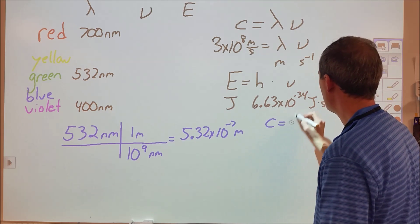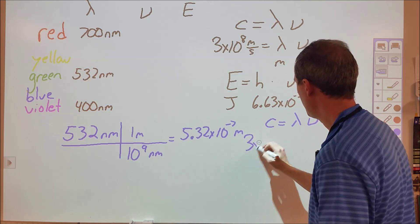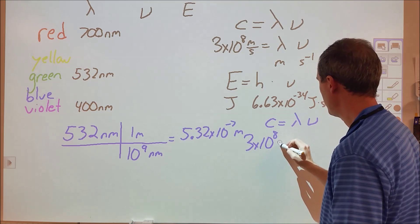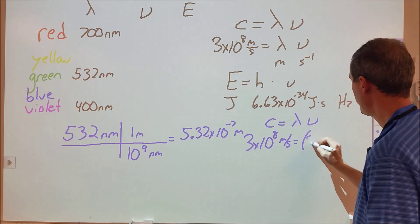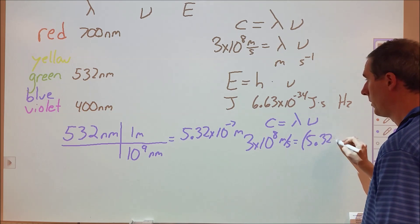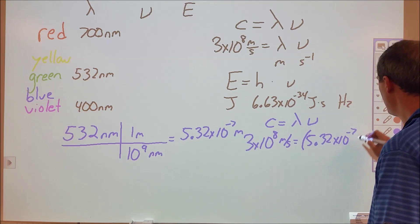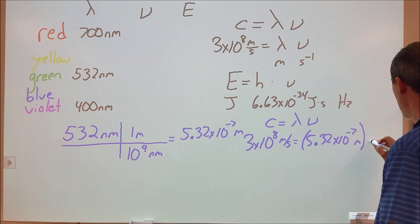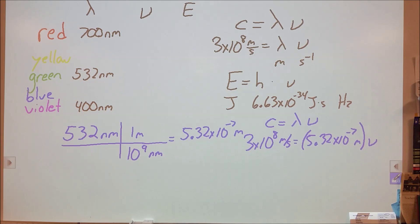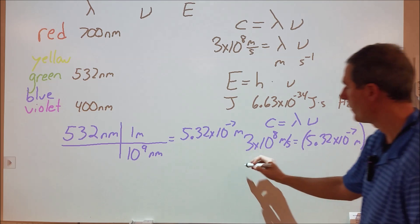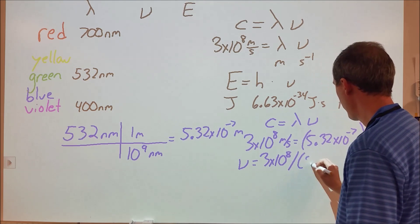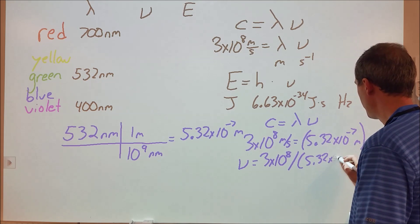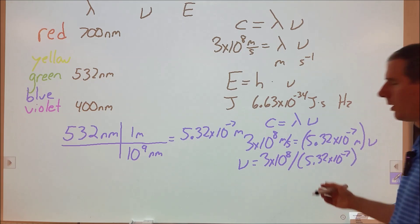We can use this and plug this into this equation here. We have C is equal to lambda times nu. We know C is 3 times 10 to the 8th meters per second. The wavelength is 5.32 times 10 to the negative 7th meters, times our frequency. If we want to know what our frequency is, our frequency is going to be equal to 3 times 10 to the 8th, divided by 5.32 times 10 to the negative 7th.